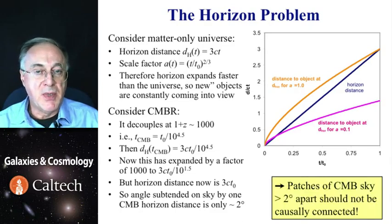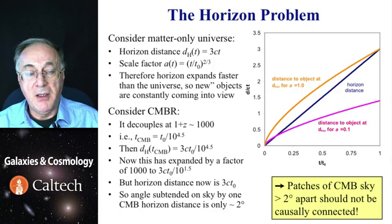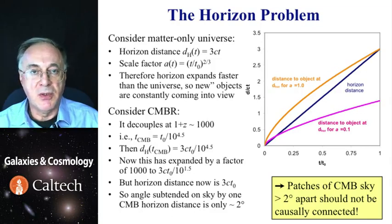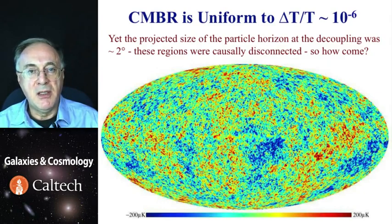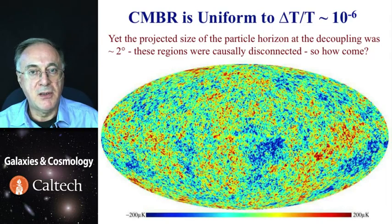So even though we can see the whole sky now, back then patches of microwave background sky that are more than say two degrees apart were not in causal contact. And yet, cosmic microwave background is uniform to a few parts in a million. So how did these independent pieces of universe know to have the same temperature within a part in a million, universes with which they could not have had physical contact?